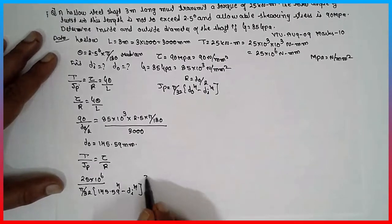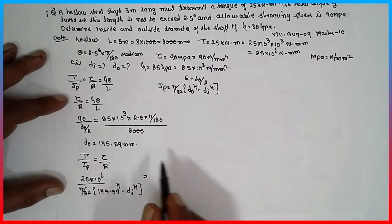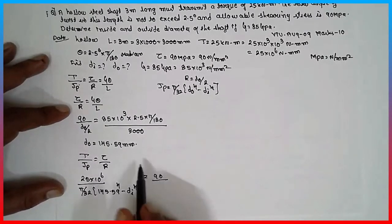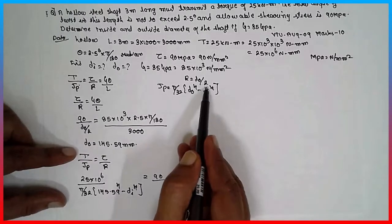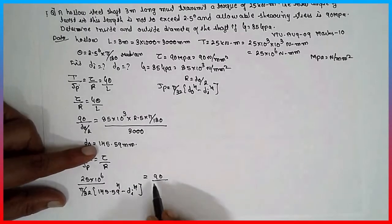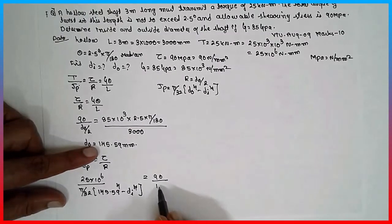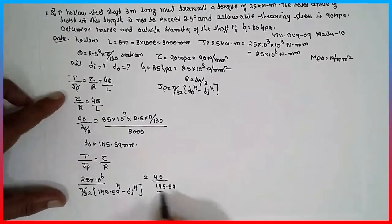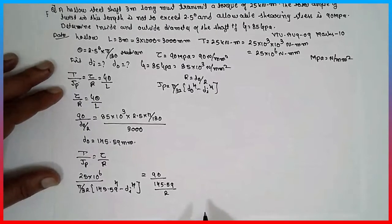Close the bracket. Tau value is known, 90. R value, R is nothing but D naught by 2. We obtain the diameter value, that is 145.59 divided by 2.